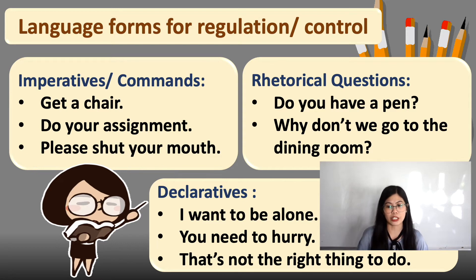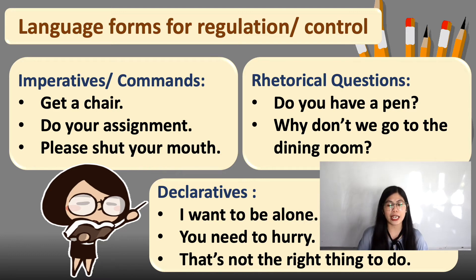Next, we have the rhetorical question. This kind of question can influence human behavior — it can make the listener follow you or not. For example, 'Do you have a pen?' A person may either say they don't have one, or automatically hand over their pen. Usually after asking, the other person automatically follows the implied request.